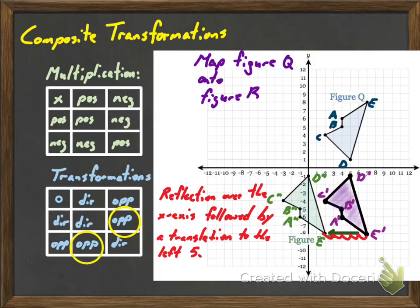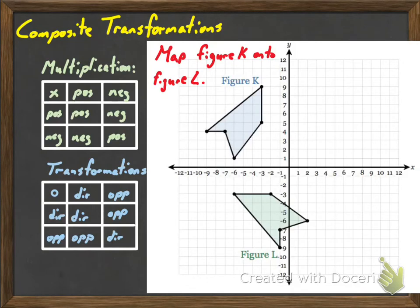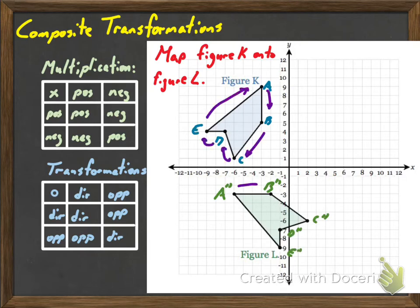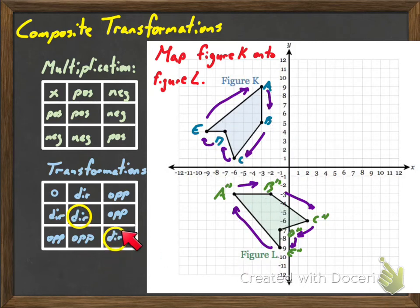Let's look at one more example. We're going to try and map figure K onto figure L, and it's again going to be a sequence of transformations. Let's look at the order of the points. If I label these A, B, C, D, E — these are going clockwise, and so are these. So it has to be some sequence that's either two reflections, or two rotations, or a translation and rotation, or two translations or something like that.